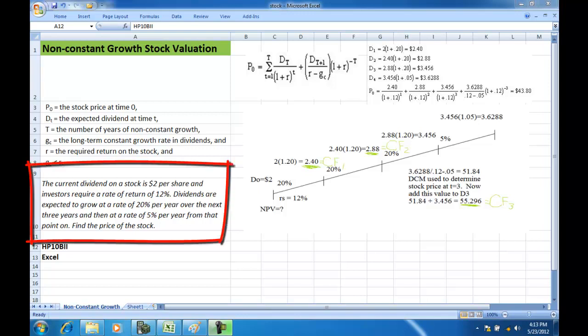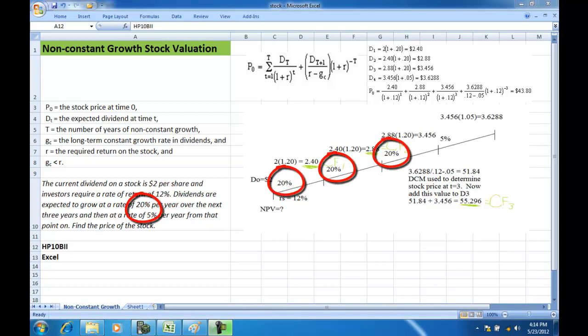Let's first go ahead and read this problem. The current dividend, D0, on a stock is $2 per share. Investors require a rate of return of 12%, that would be RS or RE depending on which textbook you're using. Dividends are expected to grow at a rate of 20% per year over the next three years and then a rate of 5% from that point on. Now find the price of the stock.